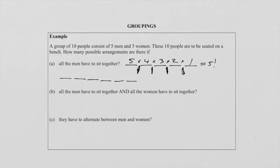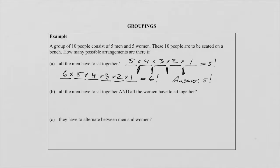We arrange these six units as 6, 5, 4, 3, 2, 1 — which gives us 6 factorial. So the final answer is 5! × 6! = 86,400. Remember, the sixth position is a group — when the group moves, all five males move together, which is why we treat them as one.